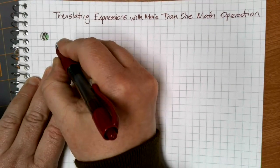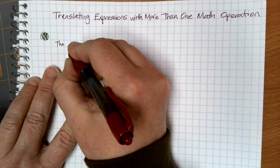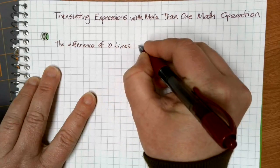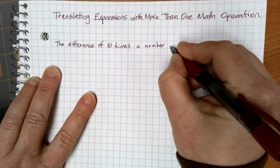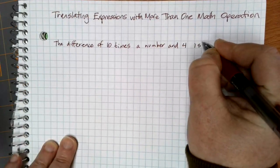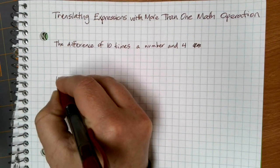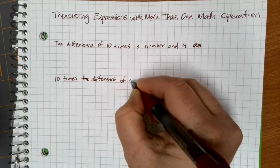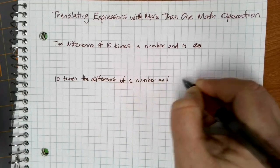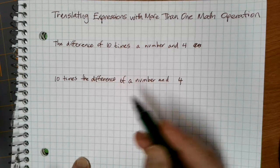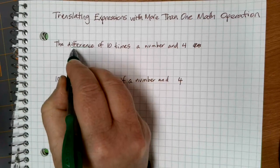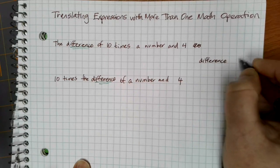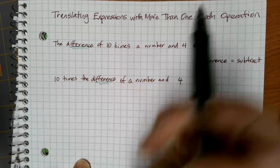Let's look at a couple of examples of things that are very similar. Let's suppose that one statement says the difference of 10 times the number and 4, and let's compare that to the statement, 10 times the difference of a number and 4. In both of these cases, we have the word 'difference,' which means subtraction, and the word 'times,' which indicates multiplication.